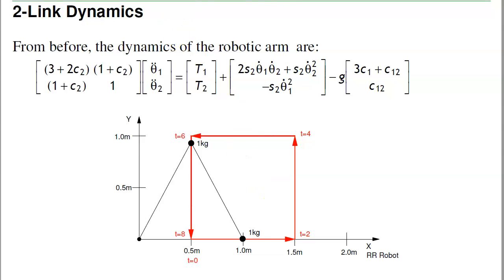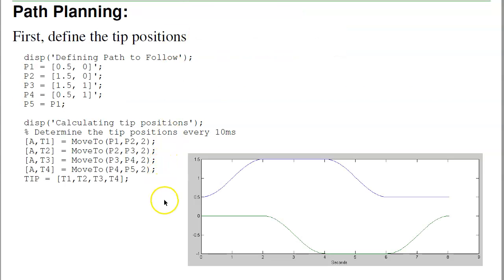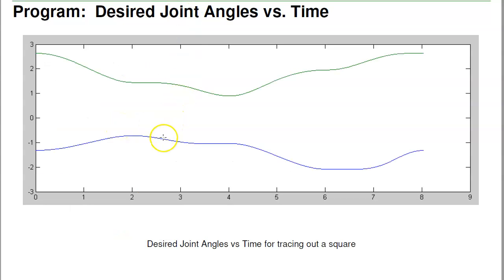Once I specify a certain path, I define the position of the tip at each point, which then defines the angles. So using path planning and spline carpeting, this is the tip position — I start out moving in the x-direction, then the y-direction, then the negative x and y. Here's the tip position versus time. Once I know the tip positions, I can calculate the joint angles versus time using the inverse kinematics routine. There are the joint angles versus time — you can see the cosine interpolation.